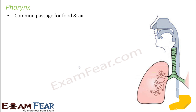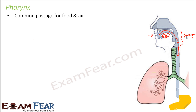What is the pharynx? It is a common passage for food and air. The intake of food happens through the mouth, and then the food gets crushed down in the oral cavity. Then the food is swallowed and has to enter the esophagus. This portion before the esophagus is the pharynx, and this pharynx is a common passage for food as well as air.